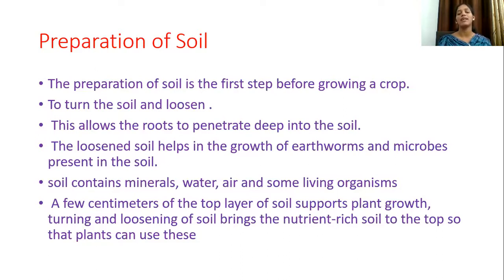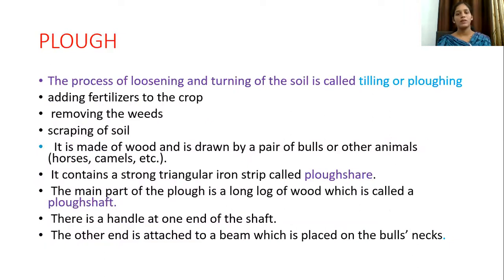The top layer nutrients the plant can use very easily. For the preparation of soil we use a plow. What is a plow? The process of loosening and turning of the soil is called tilling and plowing. Before doing plowing we have to wet the area — dry it with water before plowing.